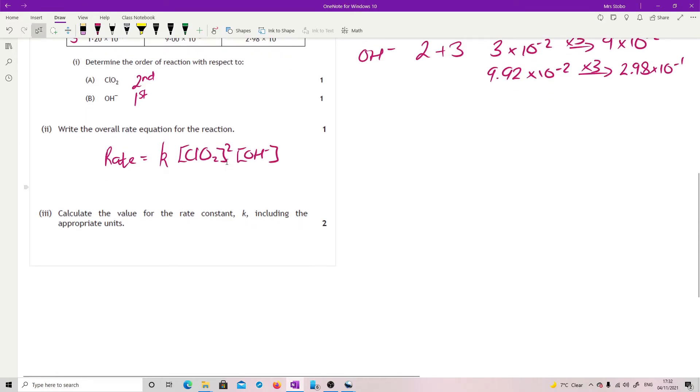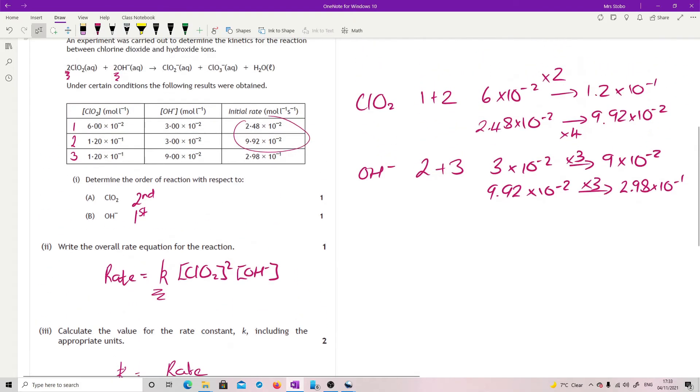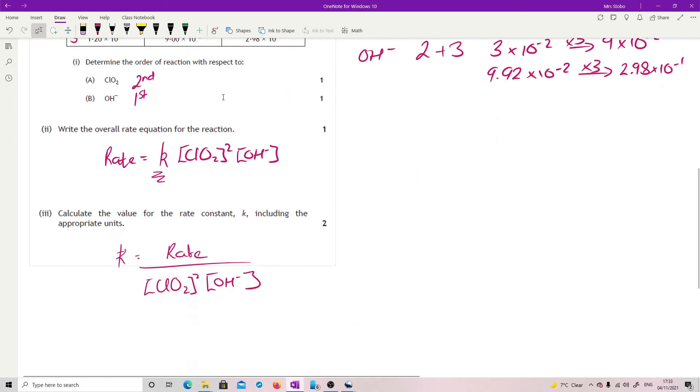Calculate the value for the rate constant including the appropriate units. So I'm just going to rearrange this equation that we've got. Our rate equals little k ClO2... sorry, keep on saying 2 minus... ClO2 squared OH-. We need to rearrange that so we can get to k. So k is your rate over your concentrations here. And I just take always the first one. So here we go. We're going to use the data from that first equation here.